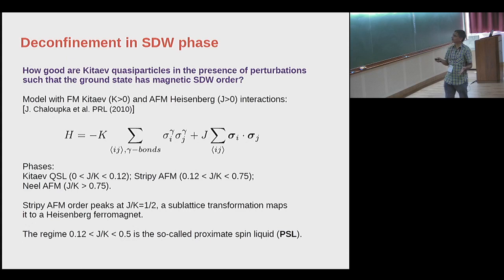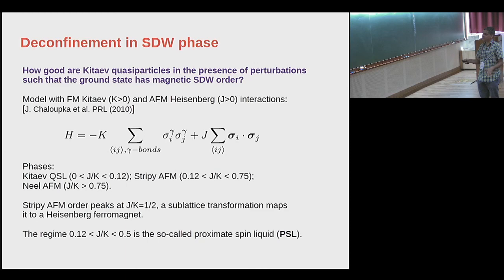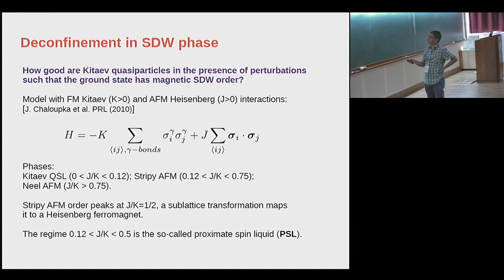Now let me state the basic question of today's talk. My question is: how good are Kitaev quasi-particles in the presence of perturbations such that the ground state has magnetic spin density wave order? For this, I just want to play with a toy model and not bother about realistic Hamiltonians, which are far too complicated.